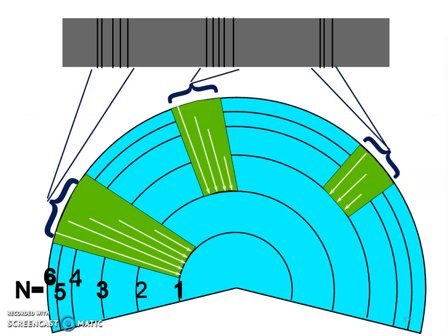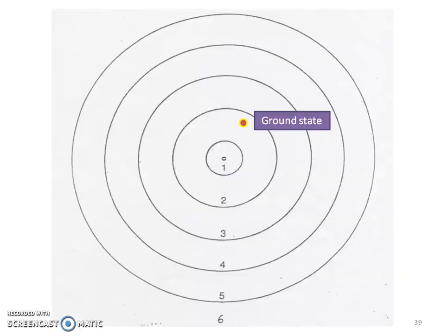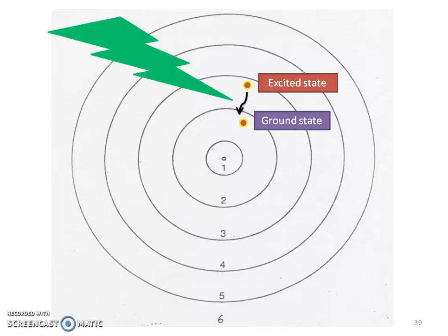The farther the electron falls down, the more energy is given off and the higher the frequency. This is a simplified model — those orbitals even have different energies inside those energy levels, containing s, p, d, and f sublevels. That's why we use hydrogen — it's simple. To recap: a ground state electron jumps up as it absorbs energy, enters its excited state, and at some point jumps back down. When it does, it gives us that light energy. The light we see is really in the form of energy from those electrons moving.